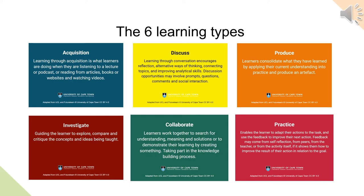The ABC learning design method makes use of the six learning types: acquisition, discuss, produce, investigate, collaborate, and practice, which are used to create a visual storyboard showing the type and sequence of learning activities required to meet a module's learning outcomes and how these will be assessed. Using learning types as a basis for designing your course or module shifts thinking to how students will learn rather than simply a list of topics to teach.